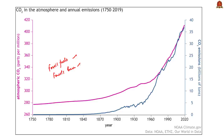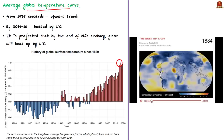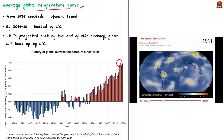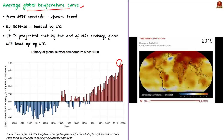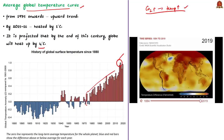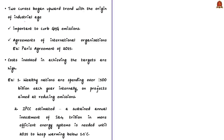The second curve is the average global temperature curve. From 1850 onwards, global temperature showed a slight warming trend, but from 1975 onwards it showed a sharp upward trend, and by 2015-16 the earth had heated by 1 degree Celsius. Based on this, it is projected that by the end of this century the globe will heat up by 4 degrees Celsius. The increase in CO2 concentration leads to increase in temperatures — these two interrelated curves both began their upward trend with the industrial age.